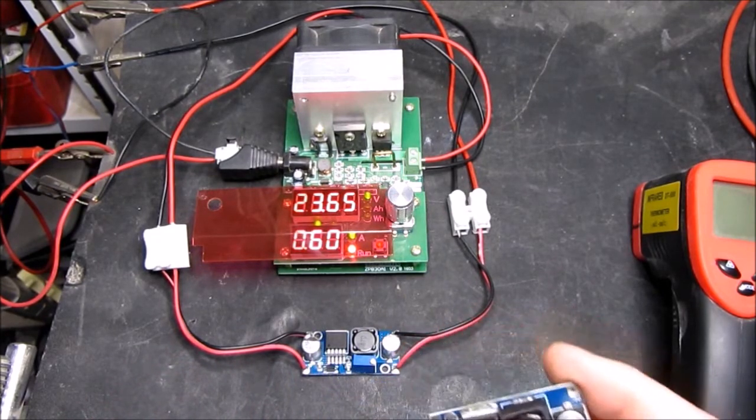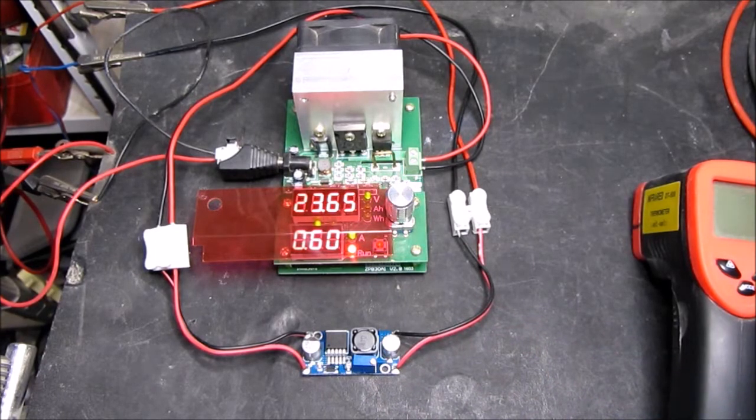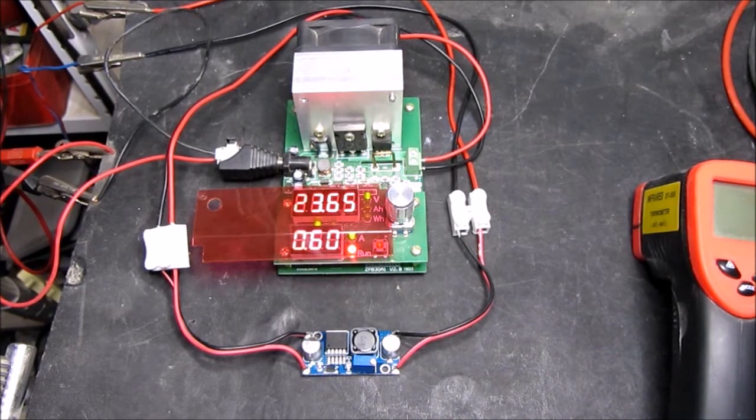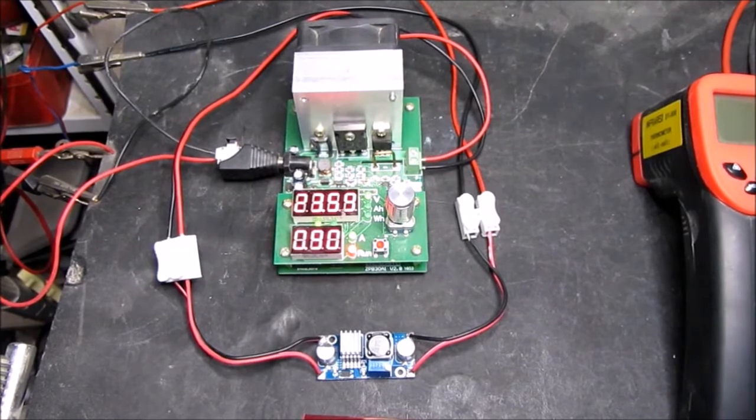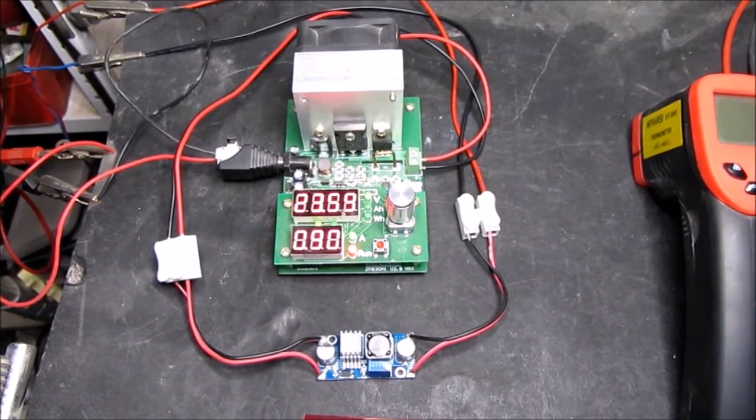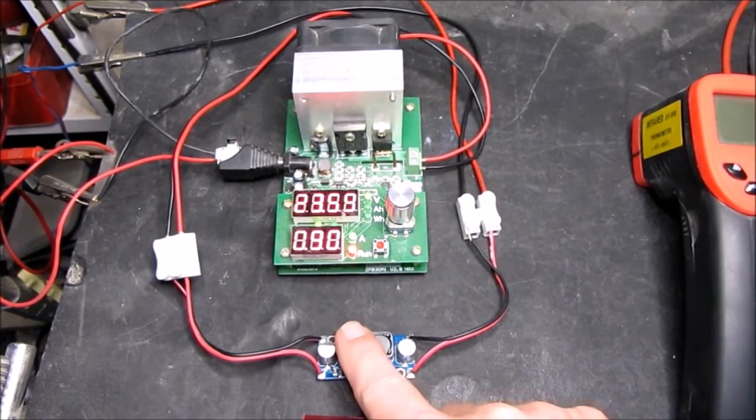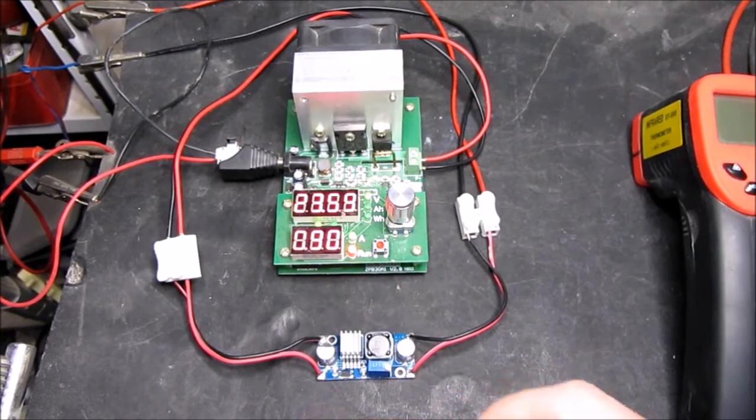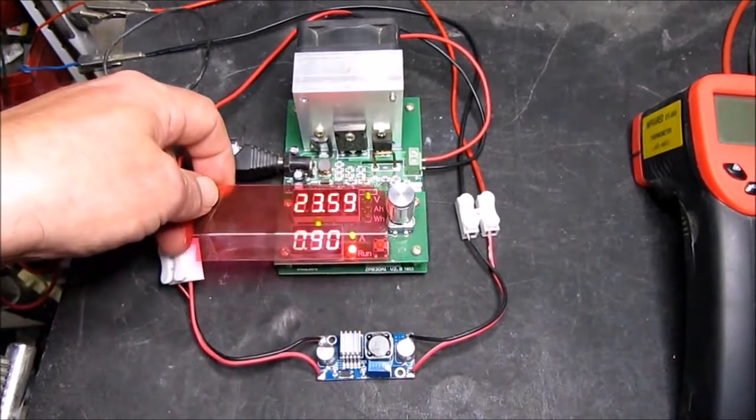Here we are back with the 0.9 of an amp which gives us 21 watts and we have the heatsink in place now. Hopefully you should be able to see the readings there - yeah, so 23.6 times 0.9.